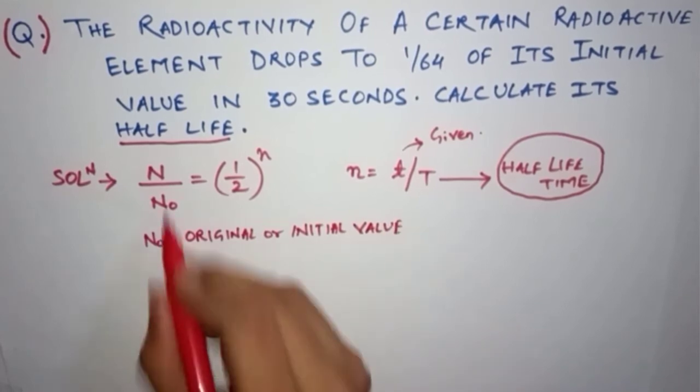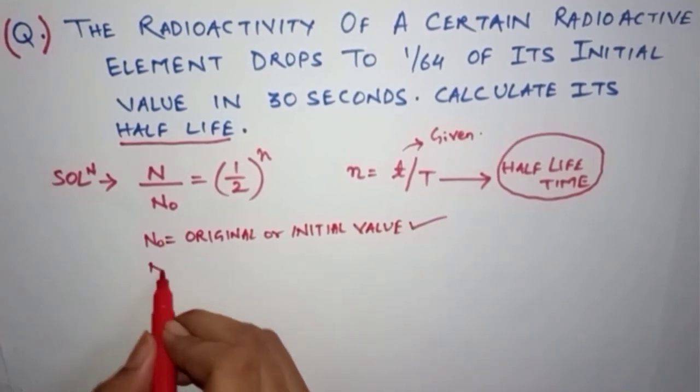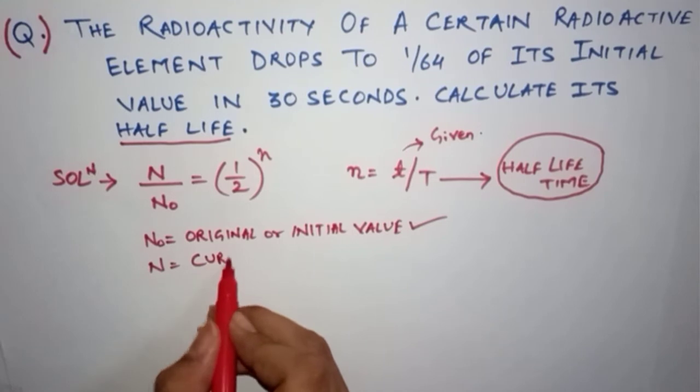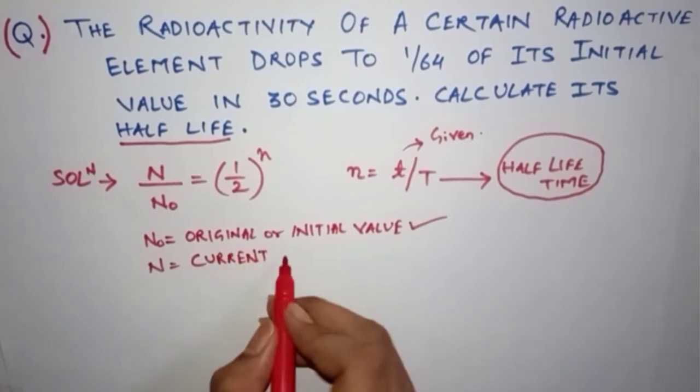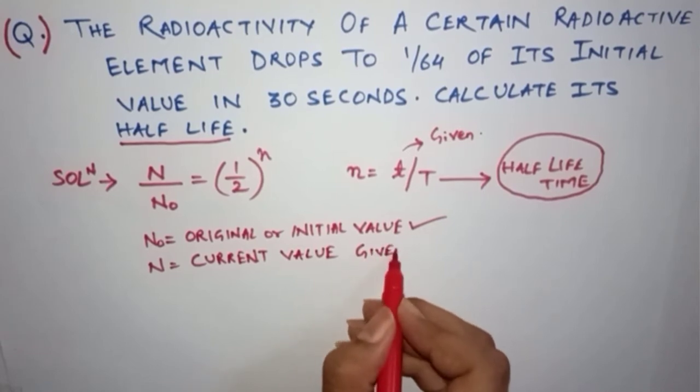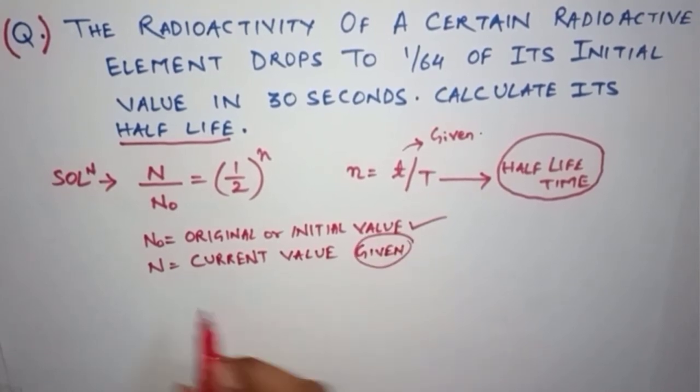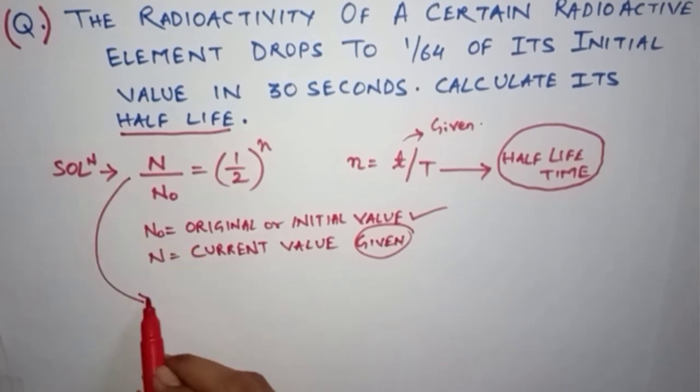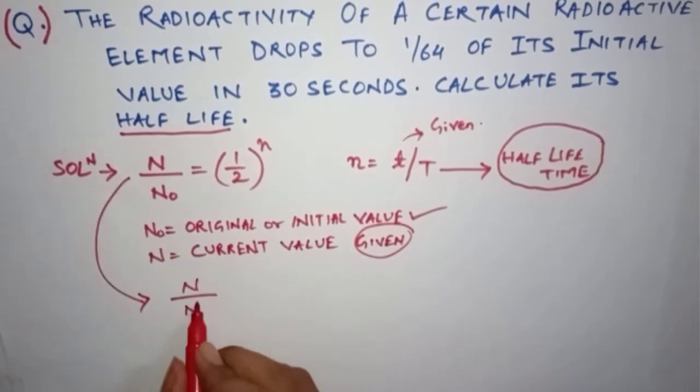Now comes capital N. This capital N is the current value of the radioactive element, which is given in the question. We will take it as the current value of the radioactive element. So here we have learned what N, N₀, small t, and capital T are.